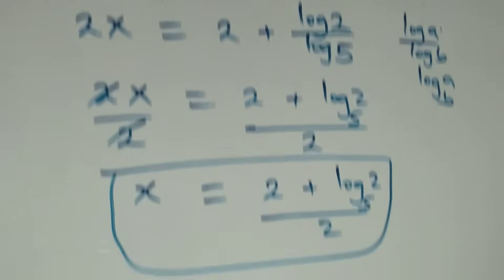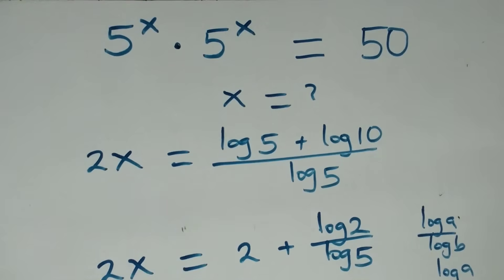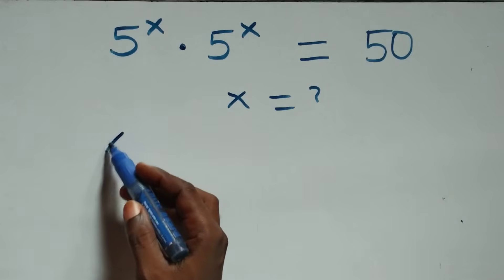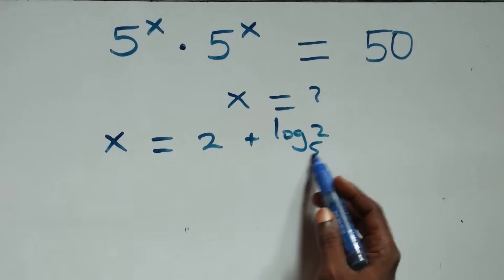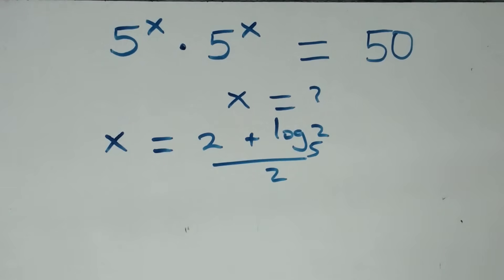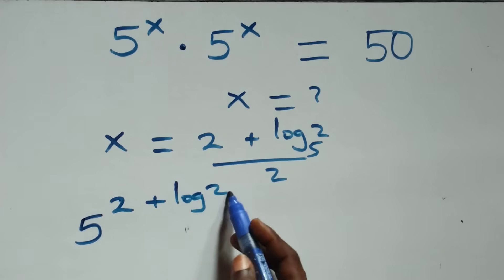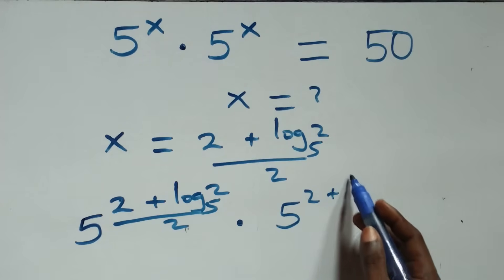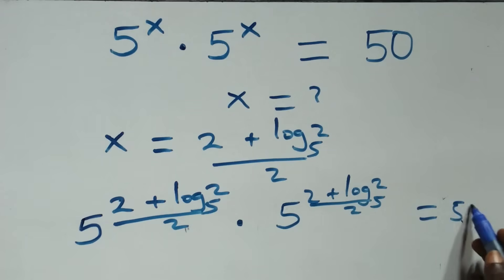Let's check here if this satisfies the given problem. That is, we substitute the value of x, which is x equals to (2 + log₅2) / 2. All we have here becomes 5 raised to power (2 + log₅2)/2, times 5 raised to power (2 + log₅2)/2. This equals to 50 on this side.